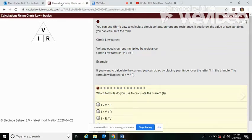Okay, calculations using Ohm's Law. This should be pretty easy, just a refresher to remind you of past lessons. You can use Ohm's Law to calculate circuit voltage, current, and resistance. If you know the value of two variables, you can calculate the third. Ohm's Law states voltage equals current multiplied by resistance. The formula is V = I × R.